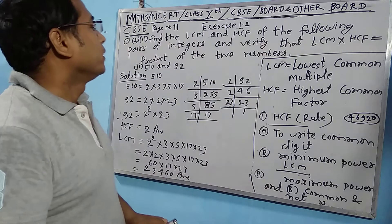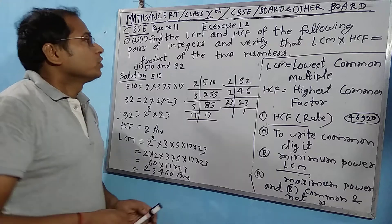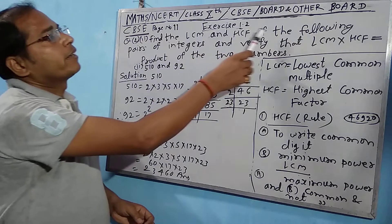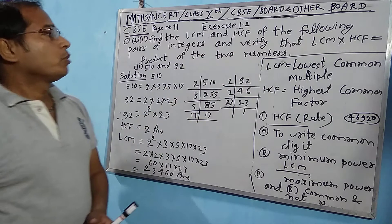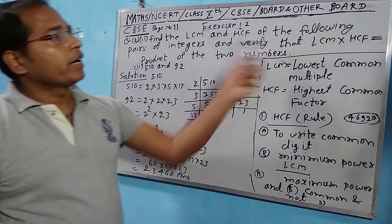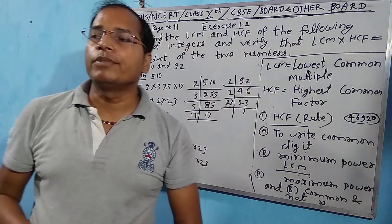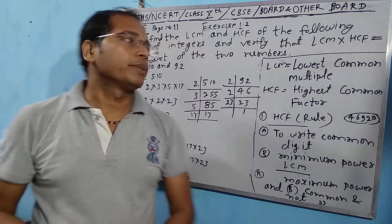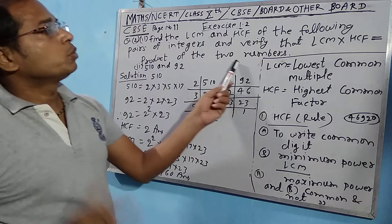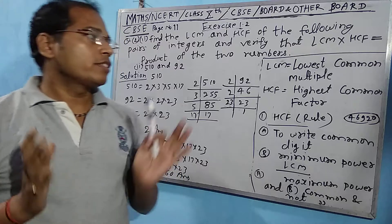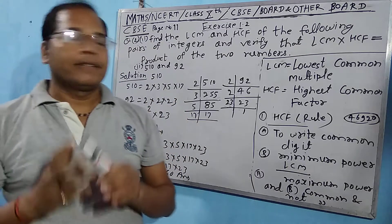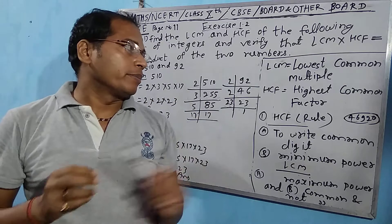We have to find the LCM and HCF of the following pairs of integers and verify that LCM into HCF is equal to the product of the two numbers. So we shall find out LCM and HCF.